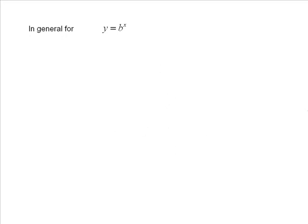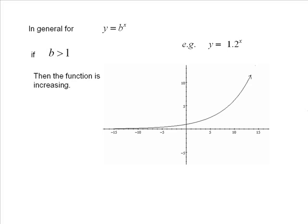So in general, for y is equal to b to the x. If b is greater than 1, then the function is increasing. So a base of 2, 3, 4. In this case, I've got y is equal to 1.2 to the x. And now that's not a very steep graph. And we're going to analyze that as well. But it's bigger than 1, 1.2 is. And so it is increasing. It's rising as you go from left to right.